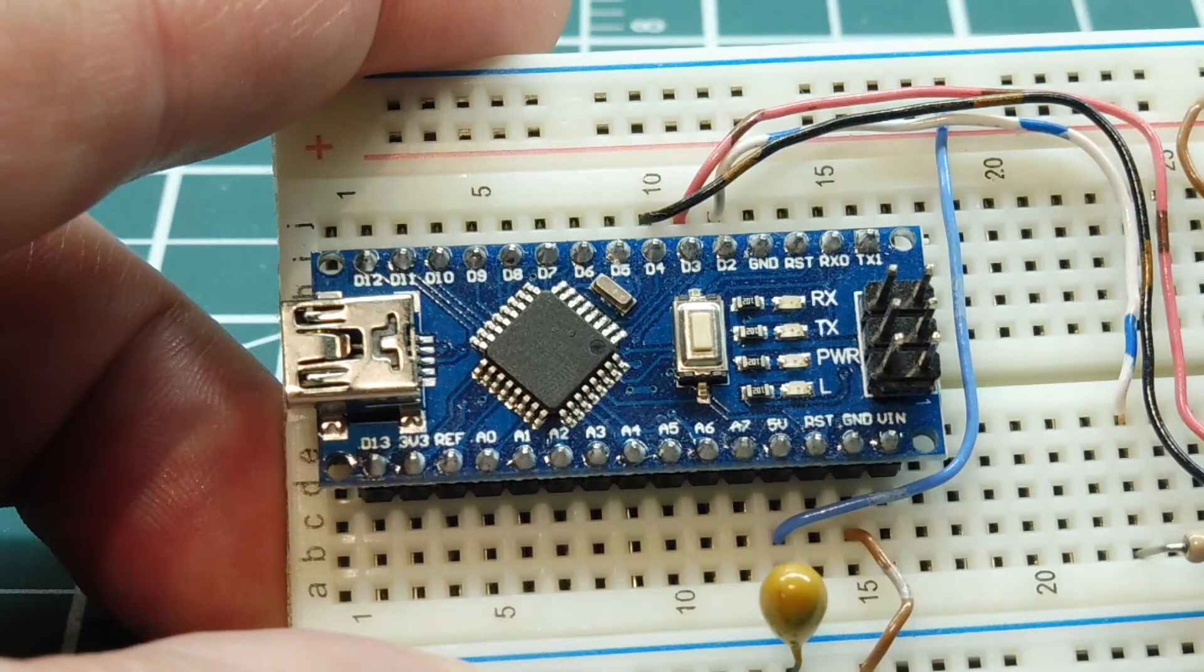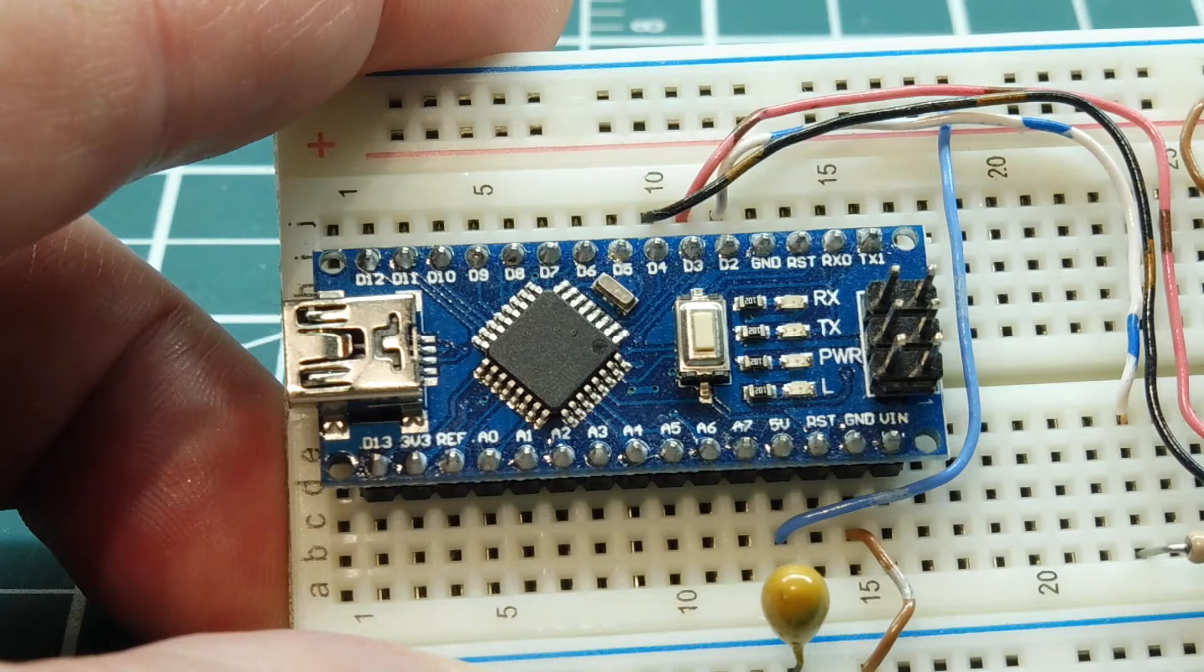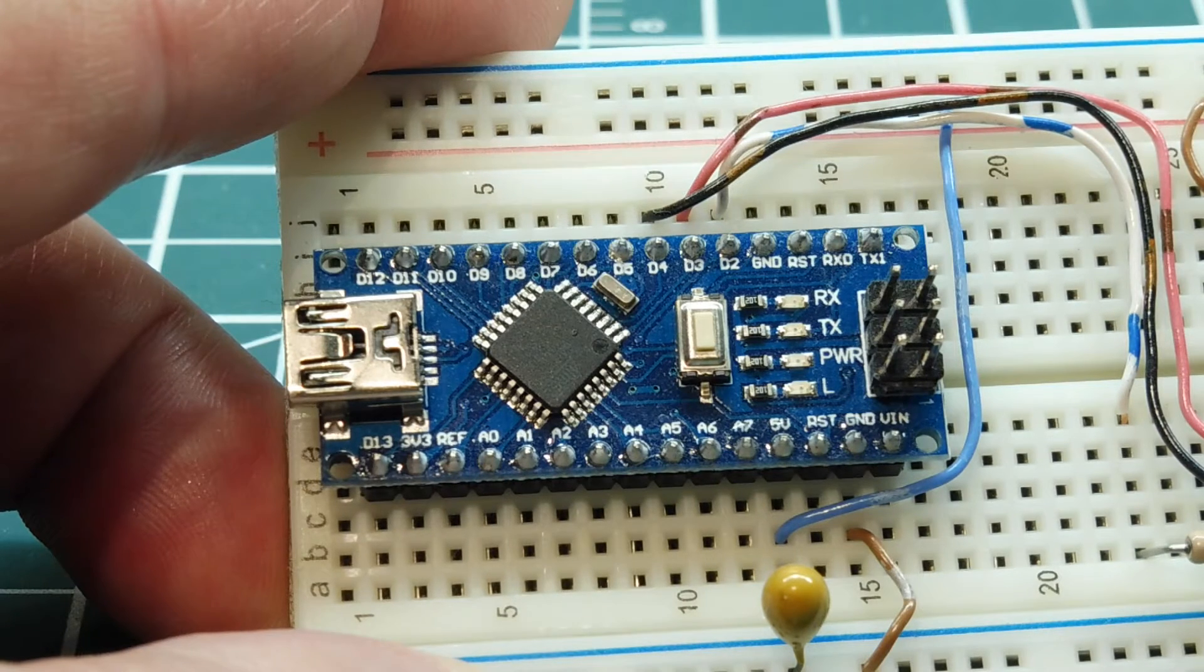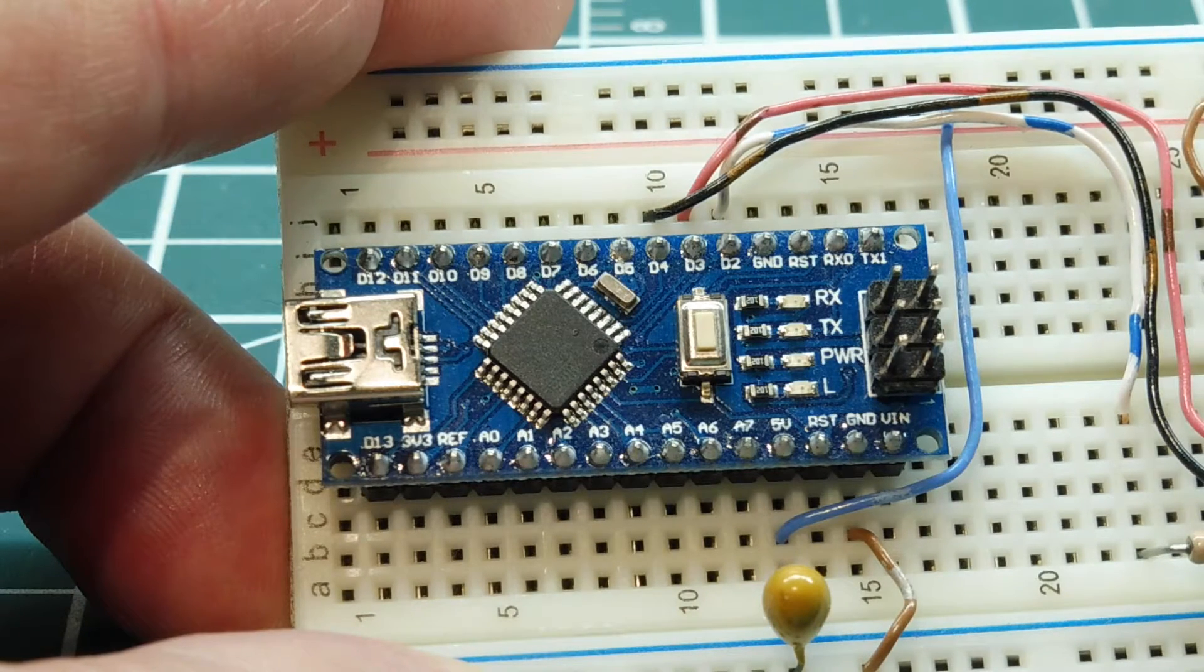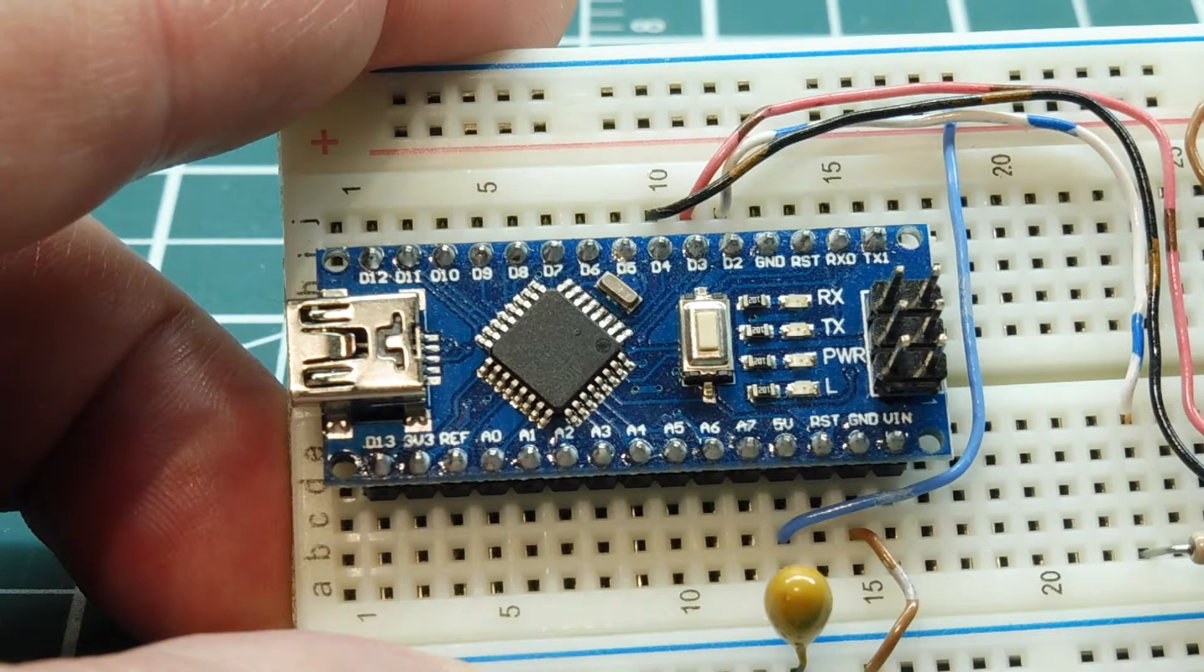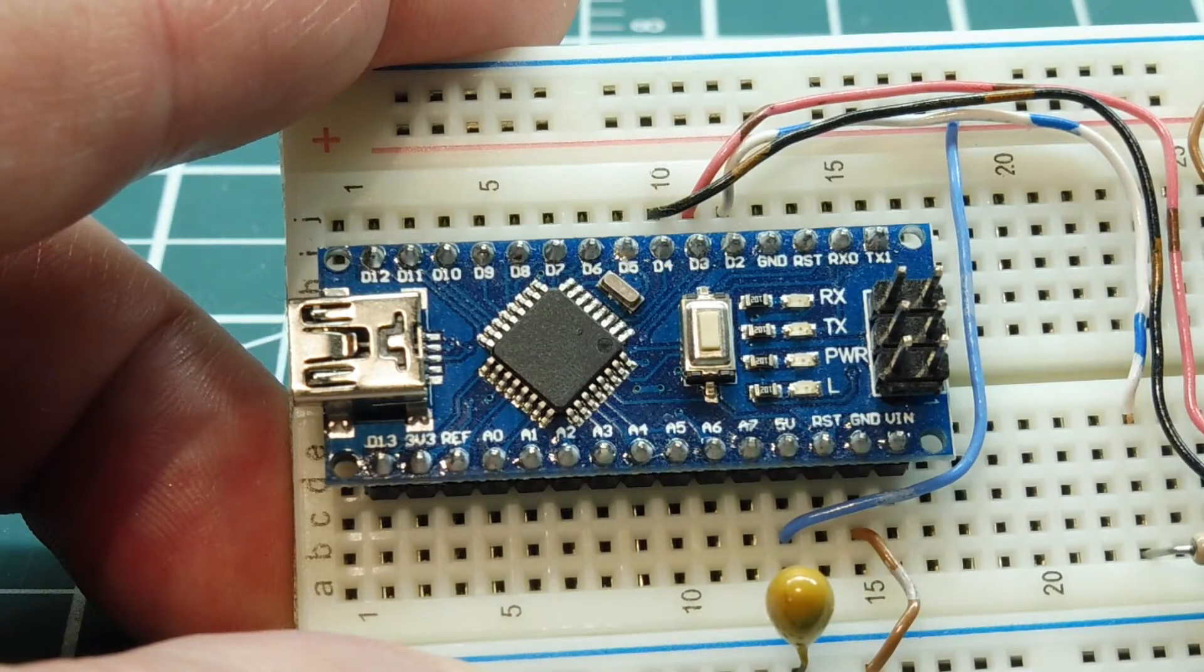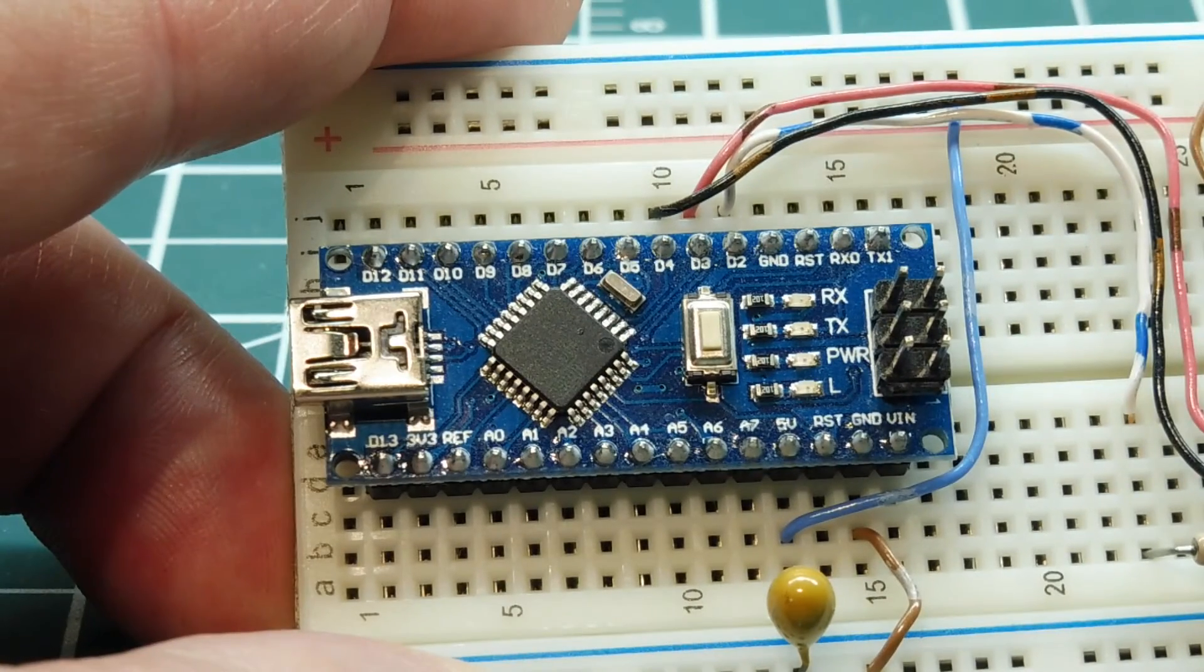Okay, in this video we're going to talk about microcontroller math, because sooner or later you're going to come across a project where you need to do some math calculations. Now the Arduino Nano uses the Atmega328p microcontroller, which is an 8-bit microcontroller and it has onboard integer math functions which are fairly fast.